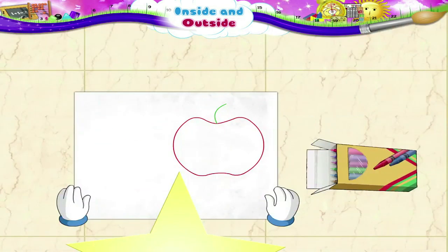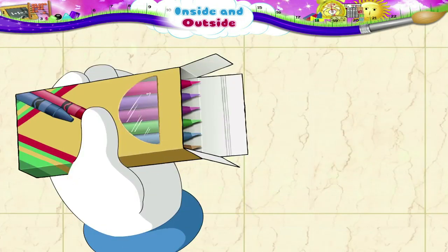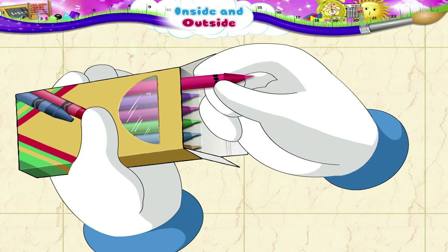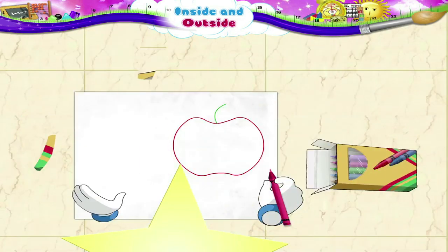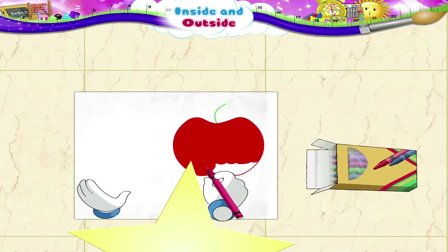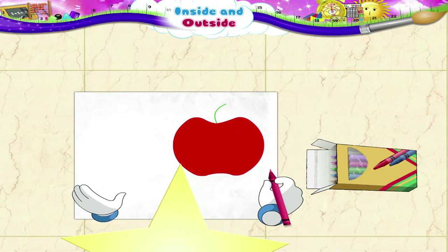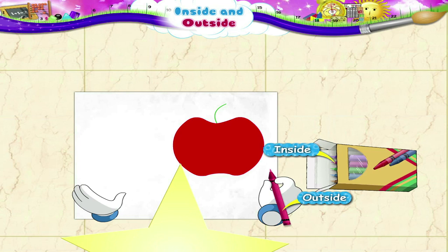What are you doing, Starry? So you are going to colour the apple. You will need the red crayon. Keep the other crayons inside the box. Take only the red crayon outside the box. Inside the box, outside the box.